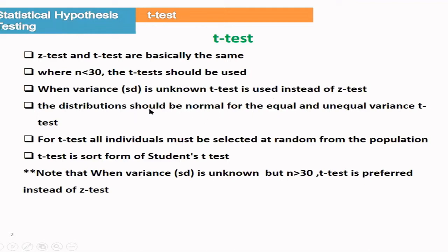The data should be normally distributed. Variance may be equal or unequal. And all the individual values from the sample should be selected randomly.